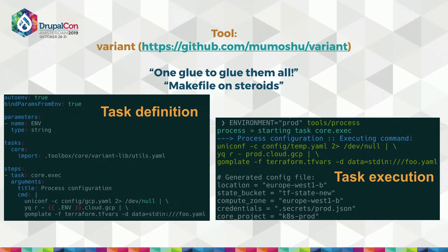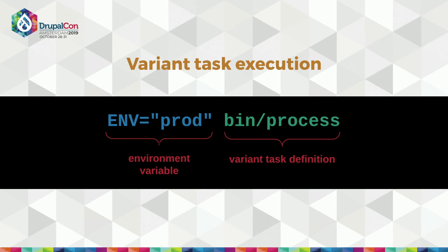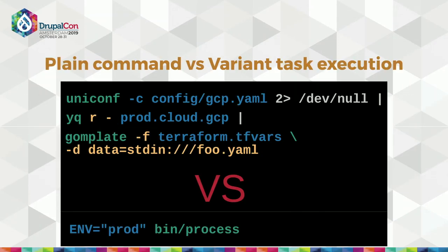This tool allows us to define parameters and include other things — it has a lot of features, so check the documentation. On the left side you can see the task definition for Variant and on the right side an example execution. We pass an environment variable, and on the left side we can see that the variable is defined — there seems to be a naming error there, but the meaning is the same. The command executes and these sub-commands are defined and run automatically. It's much more convenient than trying to remember the parameters for other tools.